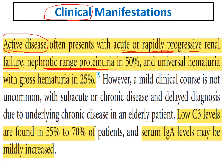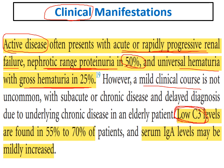There is a much higher frequency of hematuria and gross hematuria, in around 25% of patients. A milder clinical course can occur but is less frequent. Low complement C3 is seen in around 50 to 70% of patients, and IgA levels can be mildly increased.